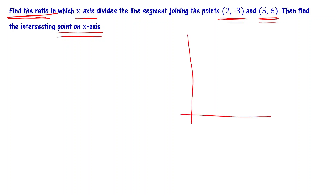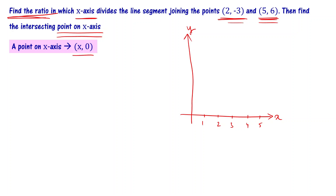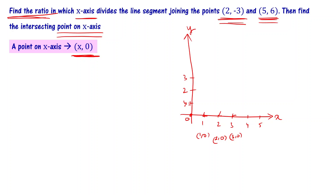Consider the x-y coordinate system. Any point on the x-axis can be written as x comma 0, because the y-coordinate is zero on the x-axis. For example, the points 1 comma 0, 2 comma 0, and 3 comma 0 all lie on the x-axis where y equals 0. We have the line connecting 2 comma minus 3 and 5 comma 6, and the x-axis intersects this line at some point.